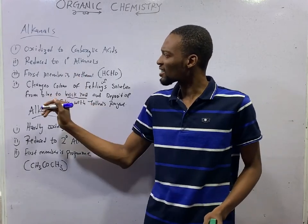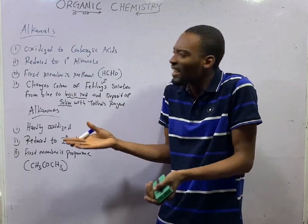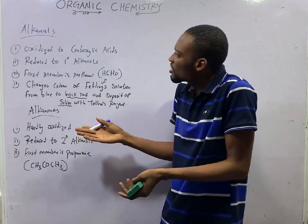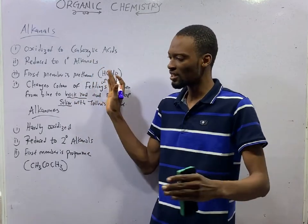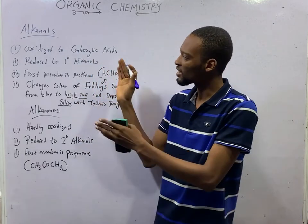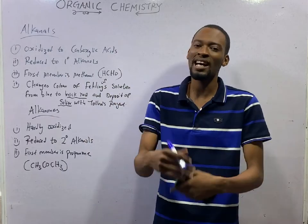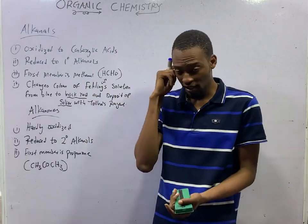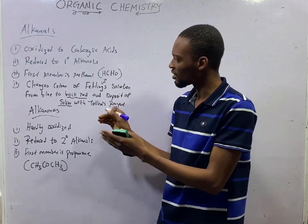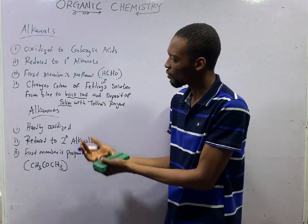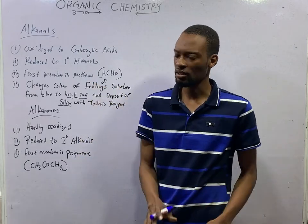Aldehydes can be reduced to primary Alcohols, since Aldehydes are in the middle between Alcohols and Acid. When oxidized, they give Acid. When reduced, you go back to the Alcohol, because Alcohols themselves are partially oxidized to give Aldehydes. When you reduce primary Aldehydes, you get Alcohols.